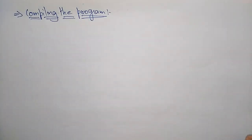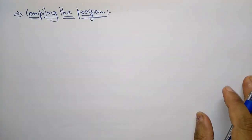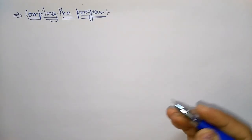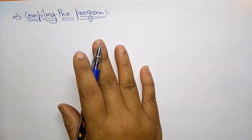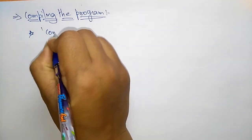Hi students. Now coming to the next topic, which is a continuation of creating and running a program. In the previous video I explained how to write and edit the program in the text editor. After writing the program, it will be saved as a source file. After that you have to compile the program. You can use the generic compiler or the GCC compiler. First I will explain the normal compilation without GCC.